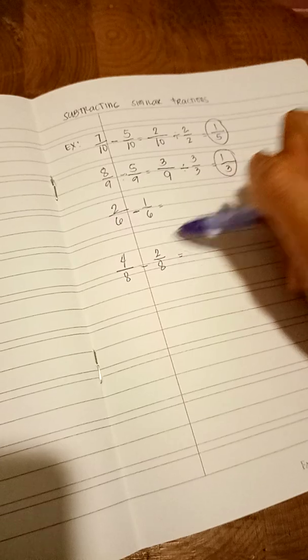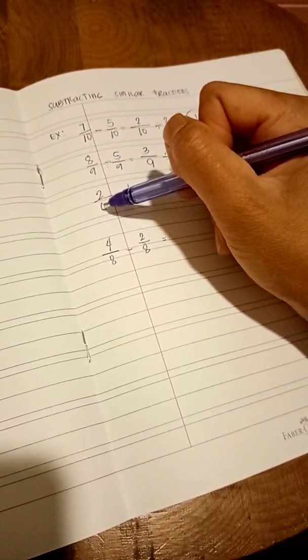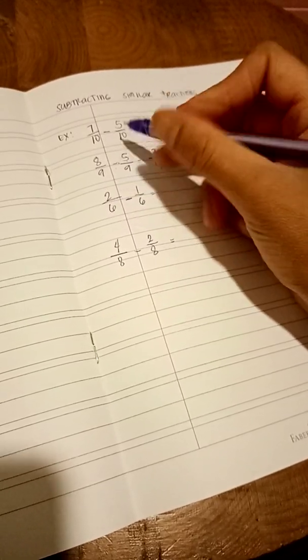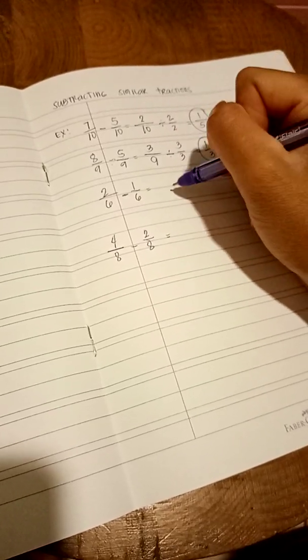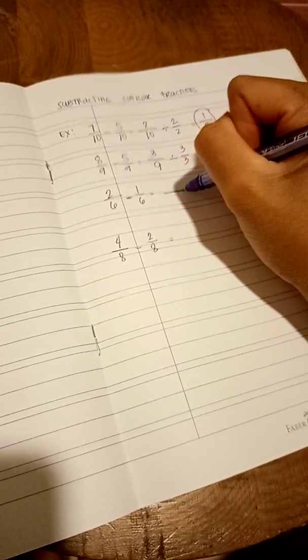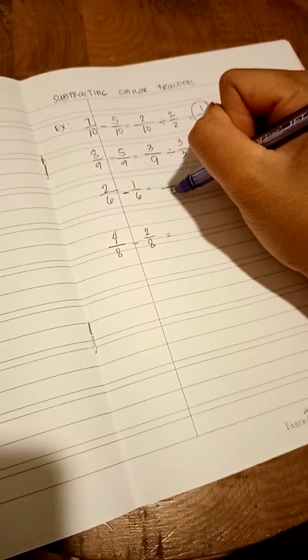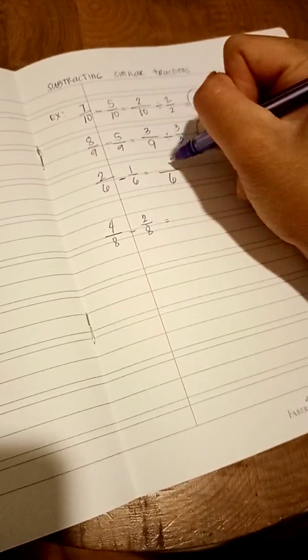Now, we proceed to the other example. 2 over 6 minus 1 over 6. Let's copy the 6. 2 minus 1 equals 1.